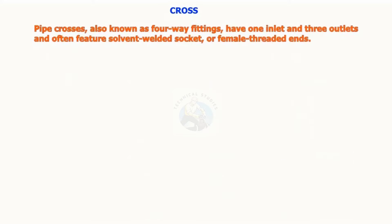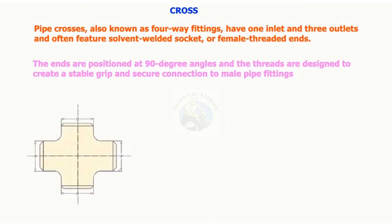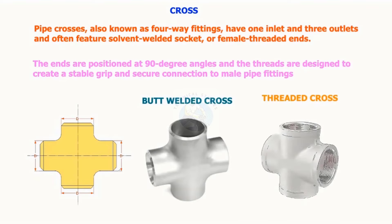Pipe crosses, also known as four-way fittings, have one inlet and three outlets and often feature solvent welded socket or female threaded ends. The ends are positioned at 90-degree angles, and the threads are designed to create a stable grip and secure connection to the male pipe fittings.